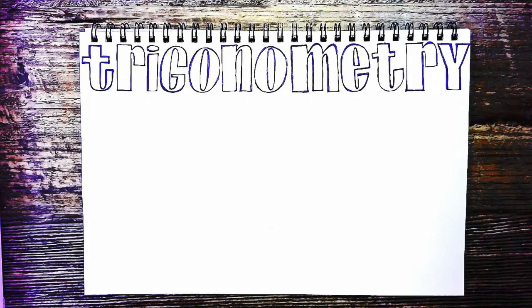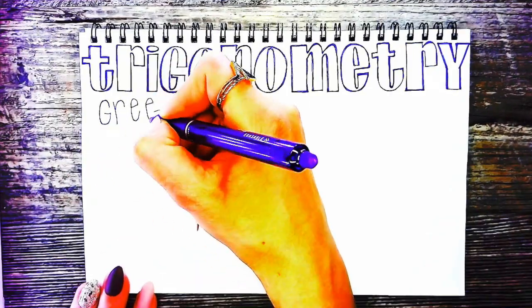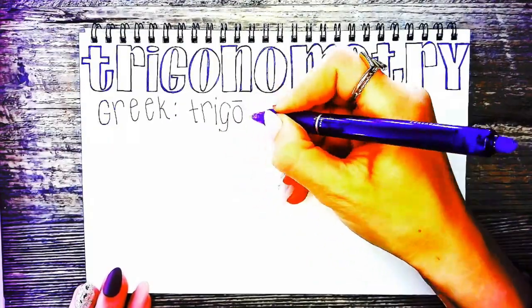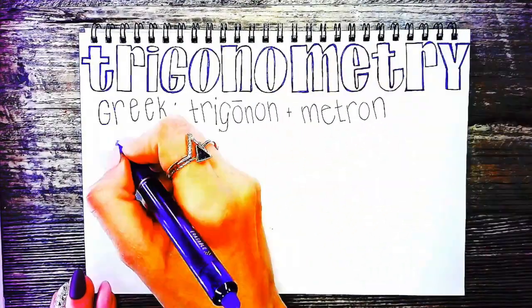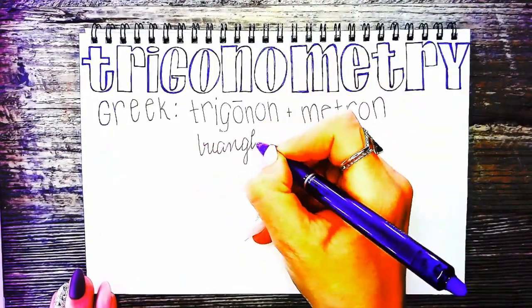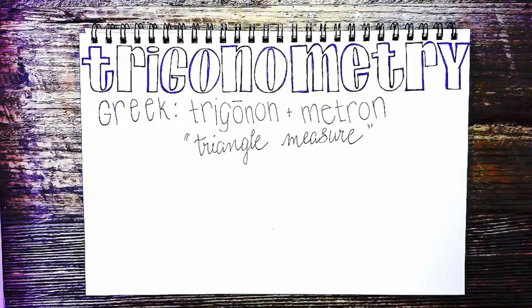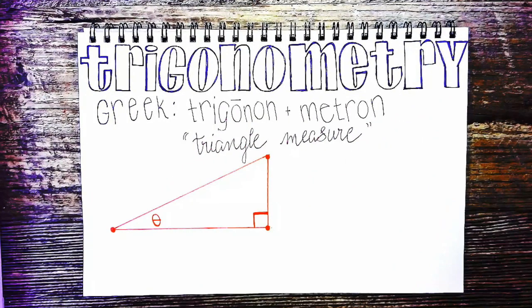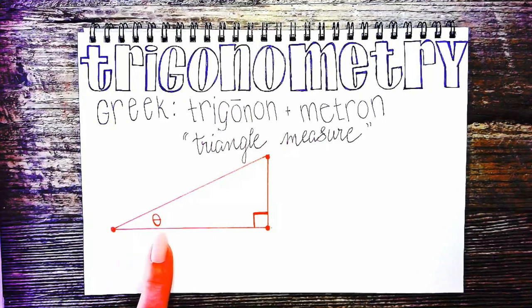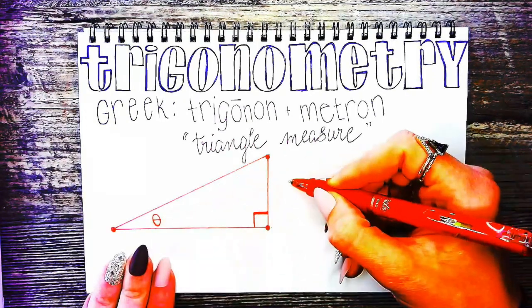The word trigonometry comes from the Greek words trigonon and metron. Those words really mean triangle measure, and trigonometry is the study of triangles, working with those angles and side lengths and how they relate to one another.